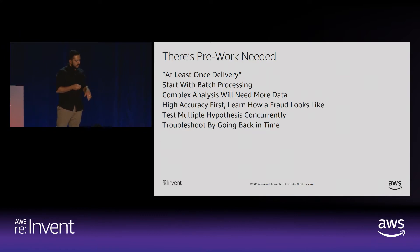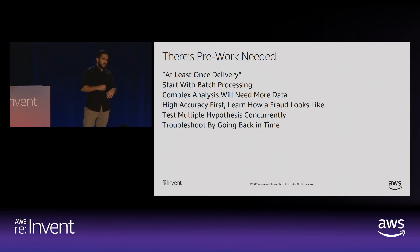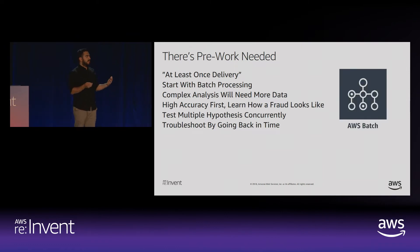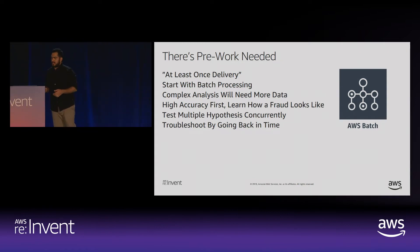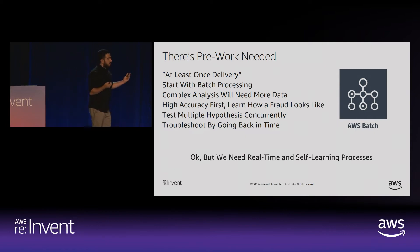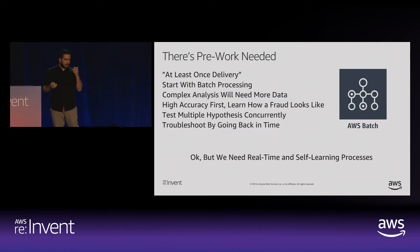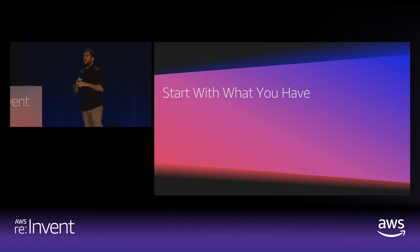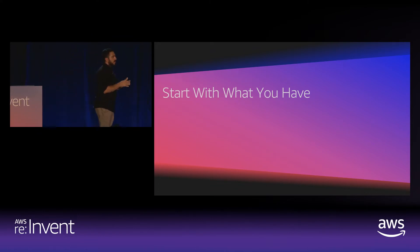You'll also be able to troubleshoot by going back in time. All of these processes you need when working with batch processing are going to be included in this service: AWS Batch. You're still going to need real-time machine learning processes — so what should you be doing? Well, to work with AWS Batch, you need to start with what you already have. You don't have to worry about recreating everything or the scheduler — just focus on what you are developing.